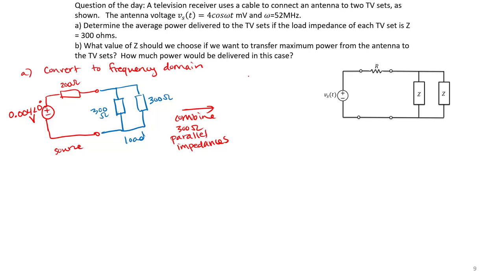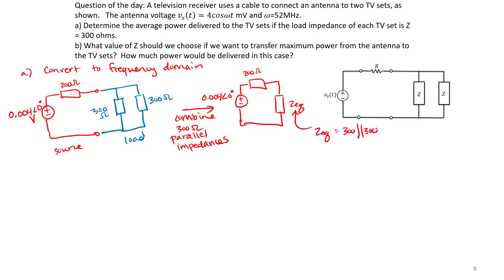Combining the two 300 ohm impedances in parallel using the shortcut equation, we determine that our equivalent impedance is 150 ohms. So now we have our circuit in the frequency domain and we're ready to proceed.